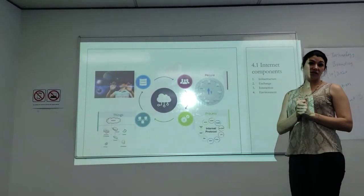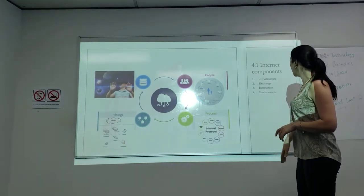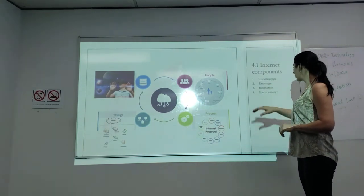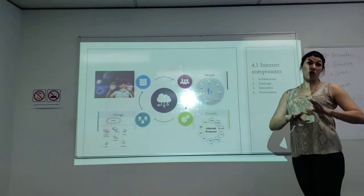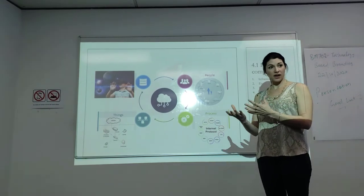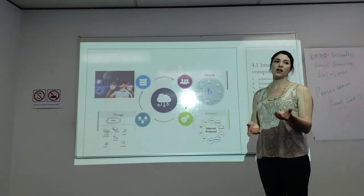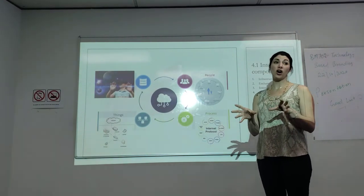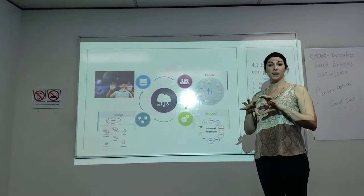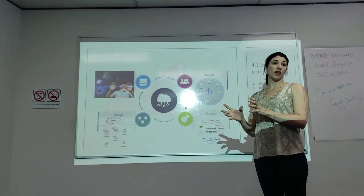Internet components are the first subject for this paper. In the internet components, we find infrastructure, exchange, interaction, and environment. Infrastructure for all companies is the same. As a company that has a media site and internet, they need to be online all the time and interacting with customers and the audience. They need all the hardware: computers, cables, power service, everything that makes the infrastructure able to use internet and have the network work.